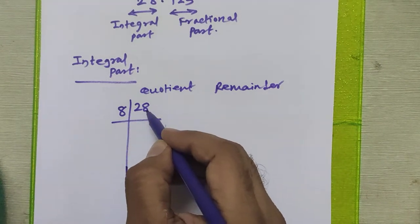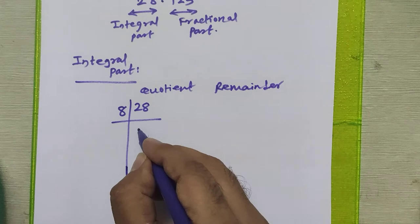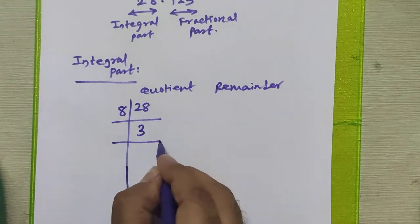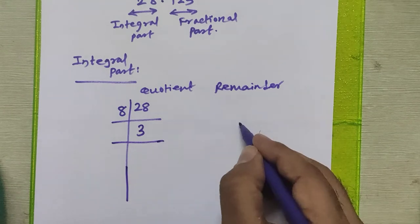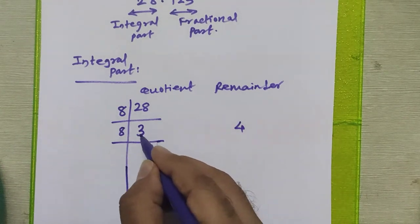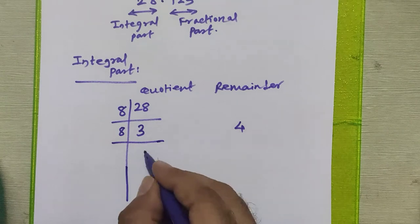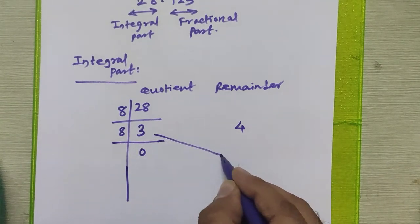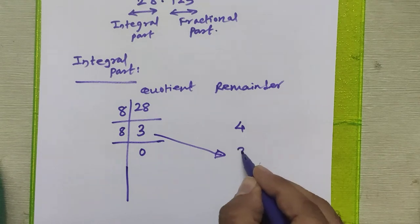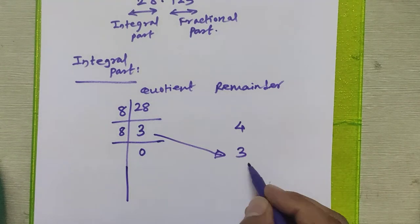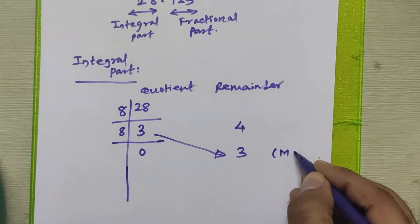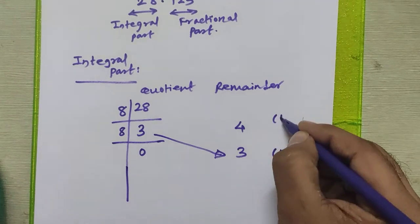So whenever you divide 28 by 8, the quotient becomes 3 whereas the remainder for this step is 4. Again you try to divide this 3 by 8, the quotient becomes 0 because it is not divisible and the remainder, 3, goes into the remainder column. So this is the remainder of the last step.